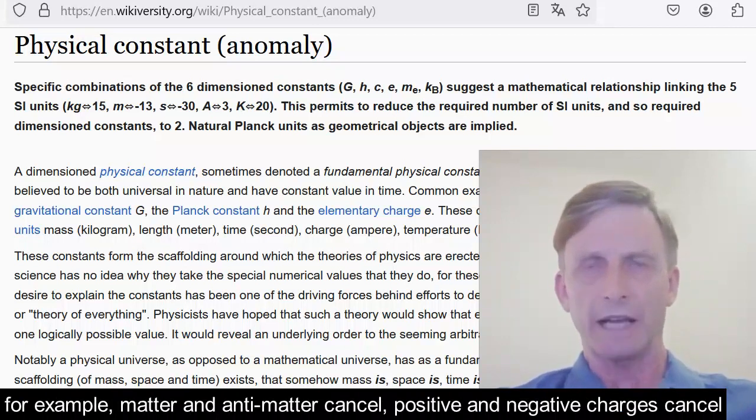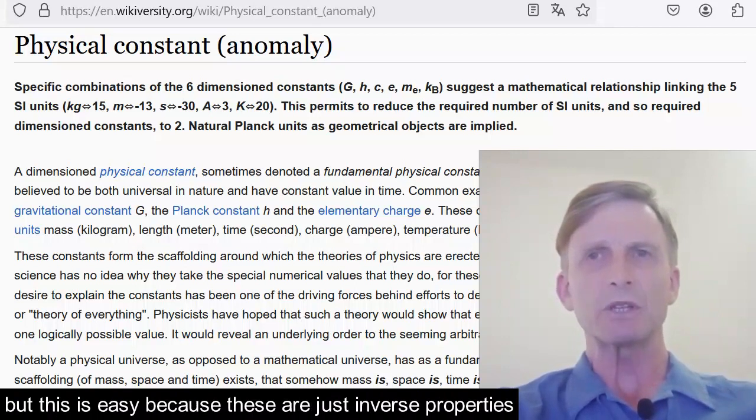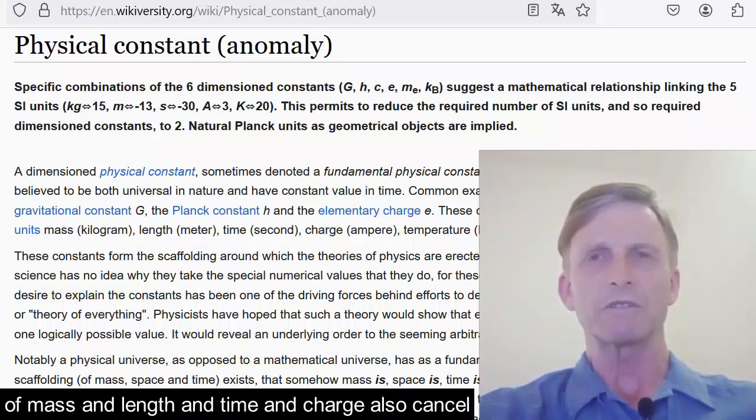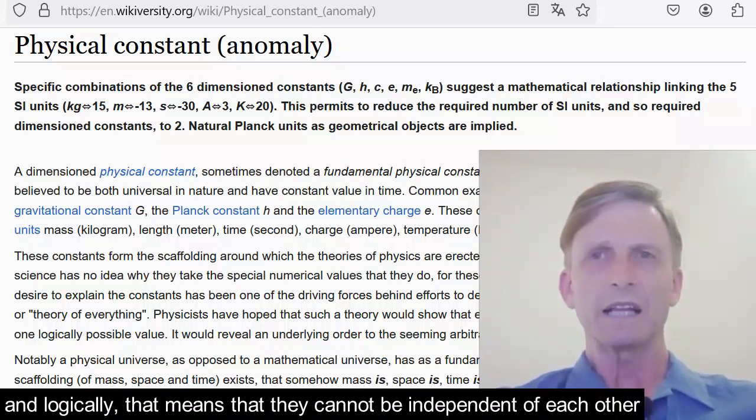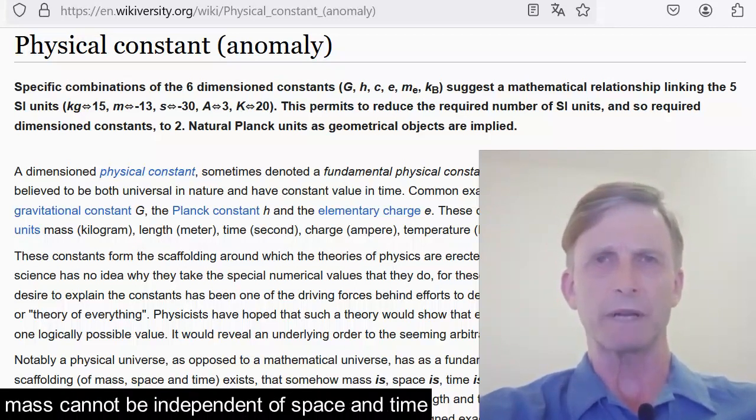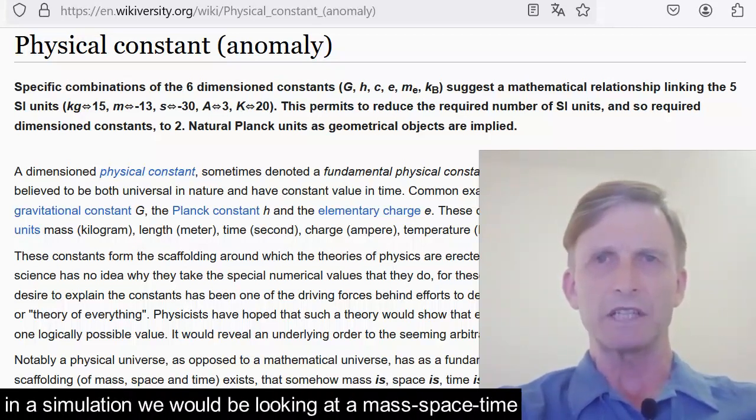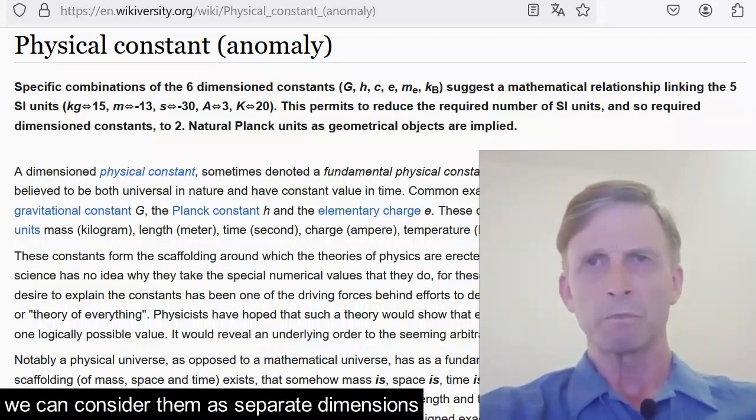For example, matter and antimatter cancel; positive and negative charges cancel. But this is easy because these are just inverse properties. For a true simulation universe, we have to show how our dimensions of mass and length and time and charge also cancel, and logically that means they cannot be independent of each other. Mass cannot be independent of space and time. We talk about gravity as mass somehow interacting with spacetime. In a simulation, we would be looking at a mass-space-time; we can consider them as separate dimensions, but they're not independent of each other.